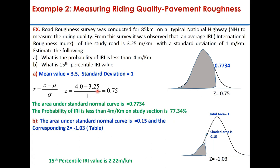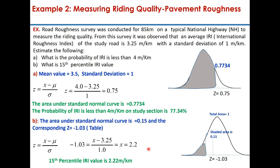The second question is: what is the 15th percentile IRI value? The 15th percentile means that the shaded area is 0.15, and you find the corresponding z value from the table, which is −1.03. You then calculate x: x = 3.25 + (−1.03 × 1) = 2.22 m/km. That is the 15th percentile IRI value. This is how normal distribution is used in different fields of traffic and highway engineering.